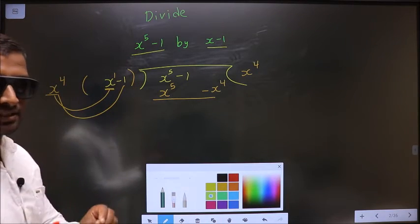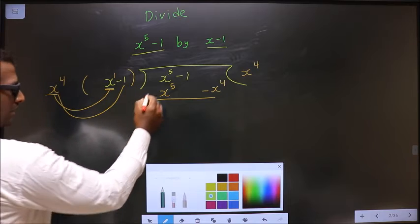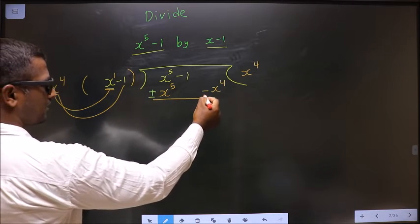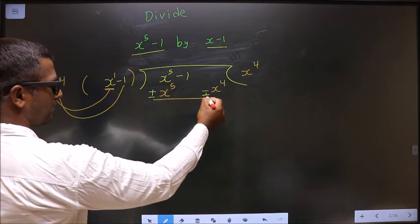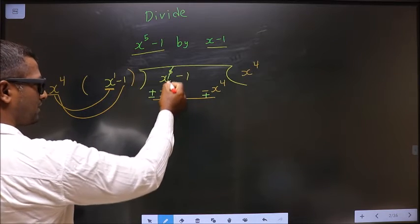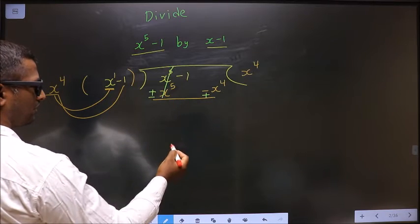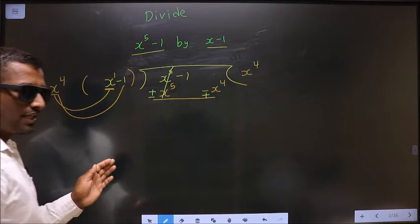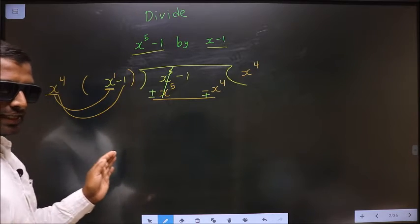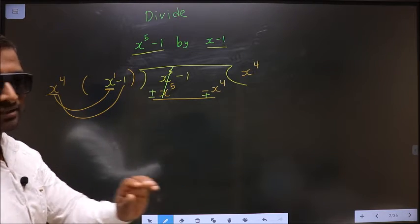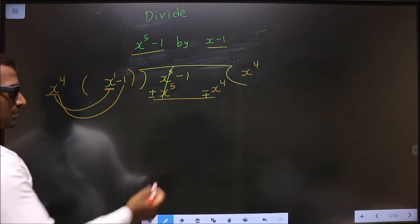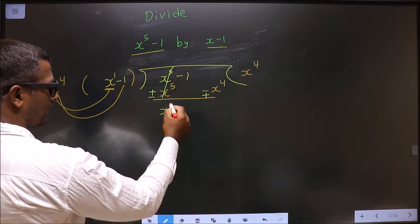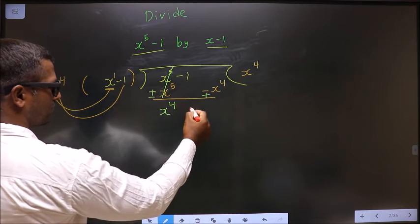Change the signs: here it is plus, make it minus; here it is minus, make it plus. Now this cancels out. Do not write minus 1 first — we write in the decreasing powers of x. So here it is plus x power 4 that I write first, then minus 1.